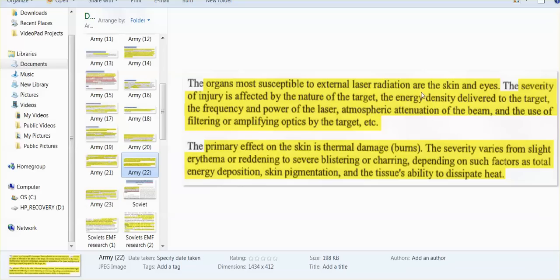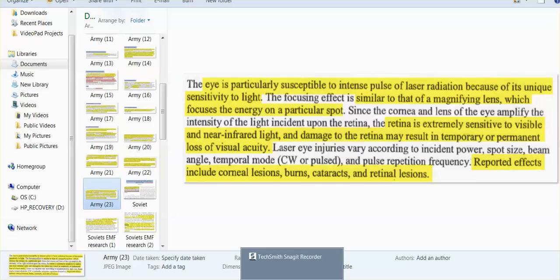Skin and eyes, they found that the thermal damage on the skin creates burns or reddening or severe blistering or charring, depending on such factors as total energy, disposition, skin, pigmentation and the tissue's ability to dissipate heat. So we're all different. Eyes are particularly susceptible to these intense pulses, not just of laser radiation, but of microwave radiation. And the reported effects, corneal lesions, burns, cataracts, and retinal lesions.